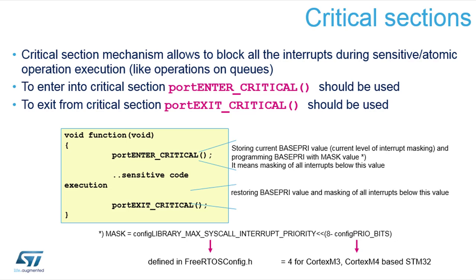Now let's look at critical sections in more detail. Whenever you need exclusive code running on the CPU, you can call portENTER_CRITICAL. This macro technically disables interrupts using the base priority register — it boosts the current task priority to the maximum system priority so that no other interrupt can preempt it. Then you execute the sensitive code and call portEXIT_CRITICAL, which restores the base priority to its original level, returning to whatever previous setup you had.